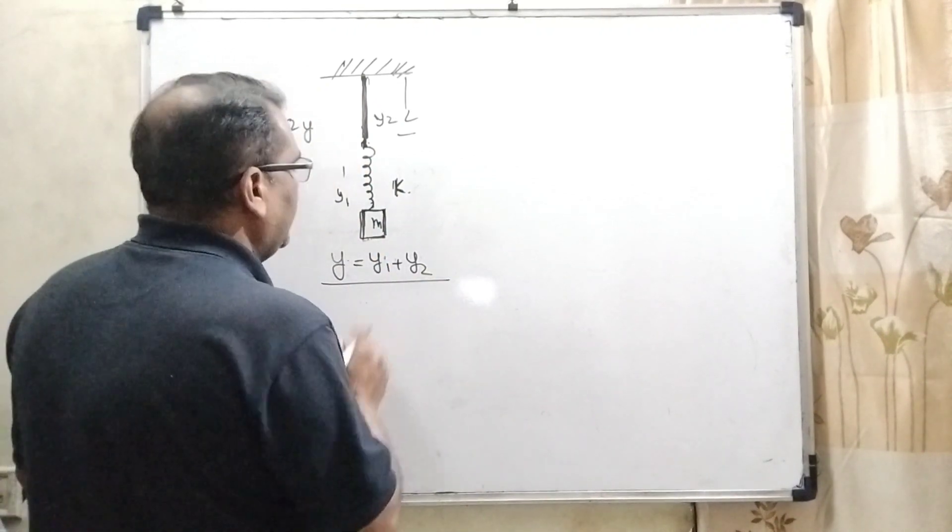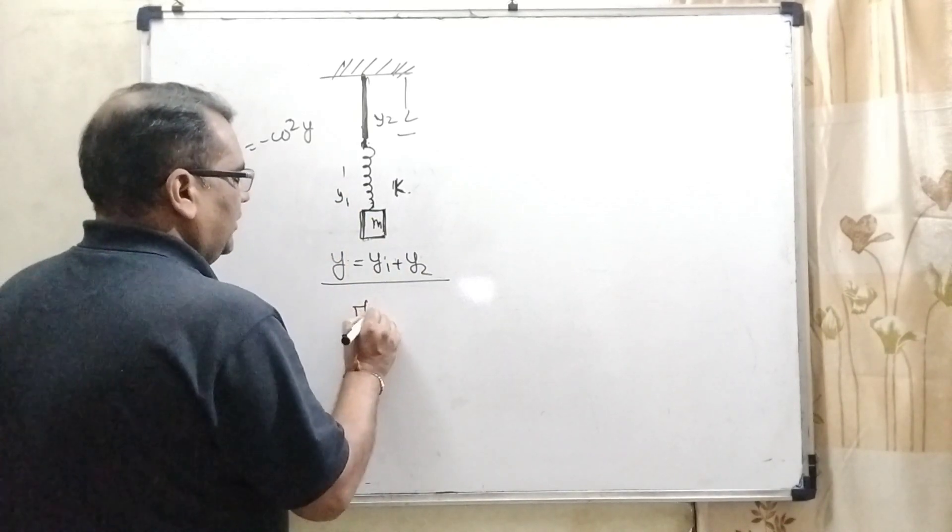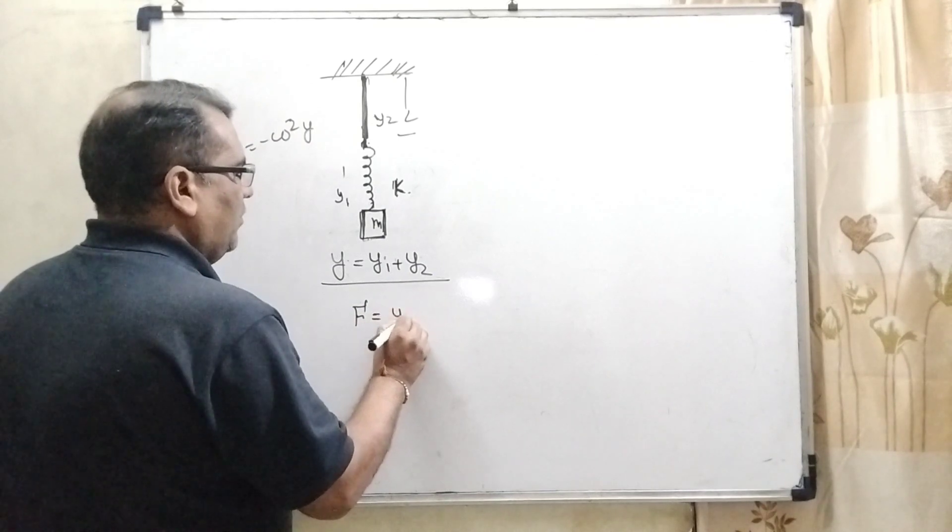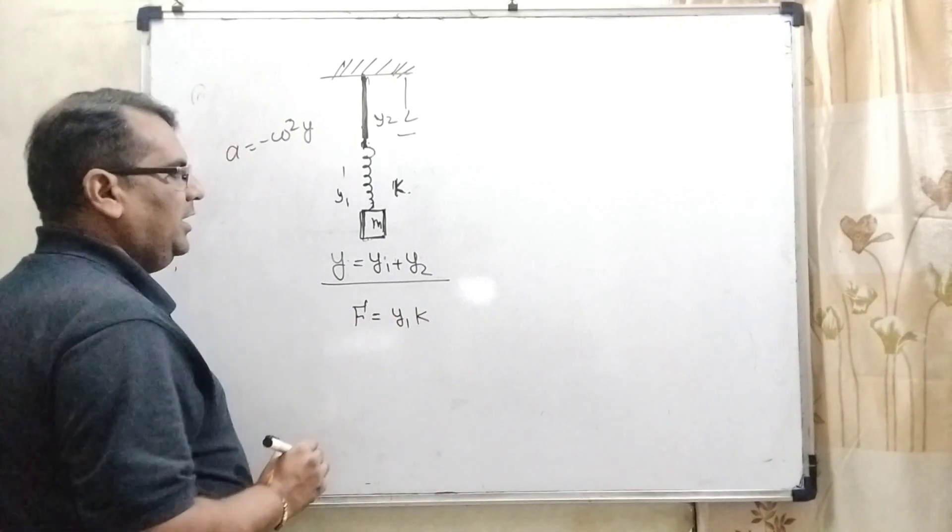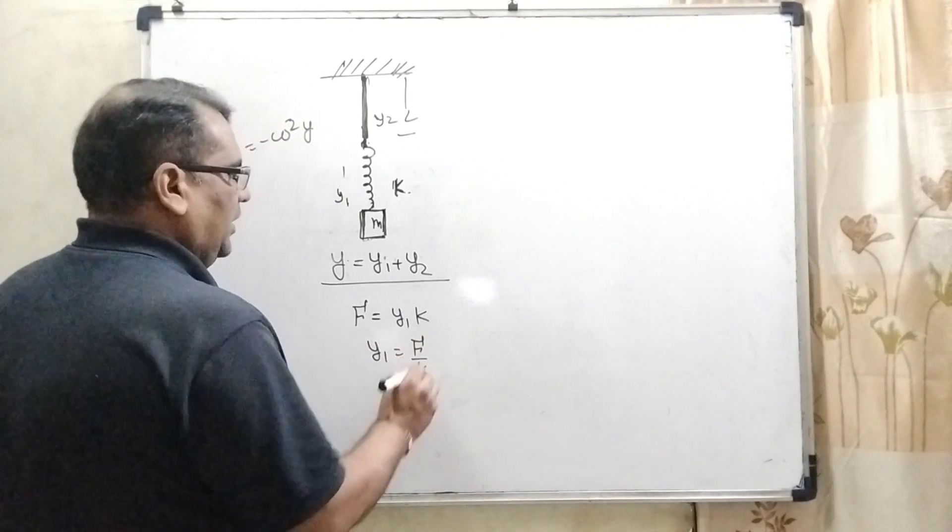Let us first find out separately y1 and y2. For y1, we know that F equals k times y1, so y1 can be written as F by k.